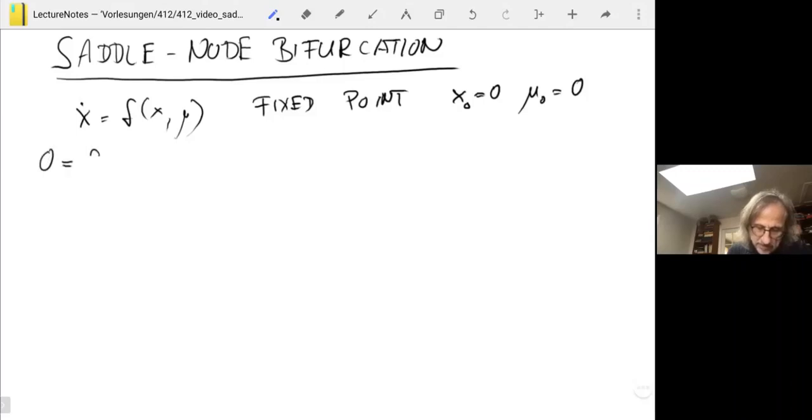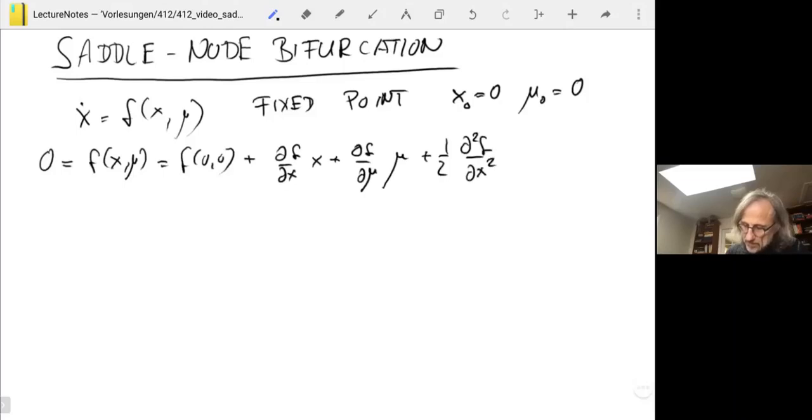To see what happens in the vicinity of that parameter value of zero, we expand using Taylor again. So f of x and mu equals f of zero and zero plus df by dx times x plus df by d mu times mu. And now we have to take a bunch of other terms still, which makes this a little bit more cumbersome. I go all the way to second order in x and mu, and then the other terms we'll neglect.